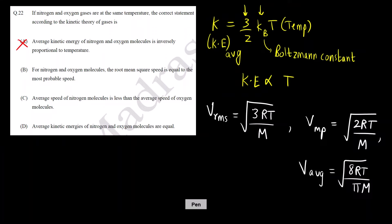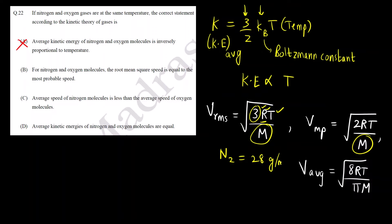Now, 3, R, and T are constants. But M — the molecular mass — is different for nitrogen and oxygen. The molecular mass of nitrogen is 28 g/mol whereas for oxygen it is 32 g/mol. So M is different, meaning V_RMS and most probable velocity will also be different. Furthermore, the formulas for V_RMS and most probable velocity are themselves different, so they cannot be equal. Option B is incorrect.